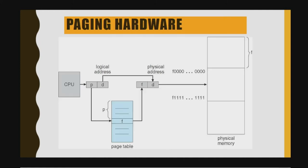This diagram shows paging hardware. We have the CPU, the physical memory, and the page table. The page table contains the page and offset. The CPU gives the logical address, the page table provides the frame number and offset, and based on this it transfers to the physical memory in the computer's main memory.